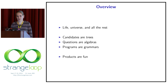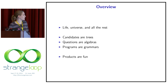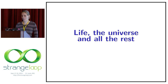So how can we alleviate this? We came up with a new way to reason about dynamic programming and even automate all the ugly parts of it. First we will start with an example, and then we will learn that candidates are trees, questions are algebras, and programs are grammars. And then we can also learn about products, which give us a lot of power and make these computations fun.